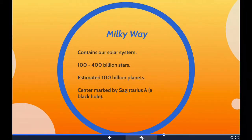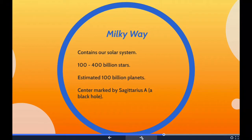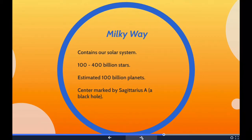The Milky Way is a galaxy that contains our solar system. It is a barred spiral galaxy with a diameter between 100,000 and 180,000 light years, estimated to contain somewhere between 100 and 400 billion stars, and probably at least 100 billion planets. The very center of the Milky Way is marked by an intense radio source named Sagittarius A, which is likely to be a supermassive black hole.